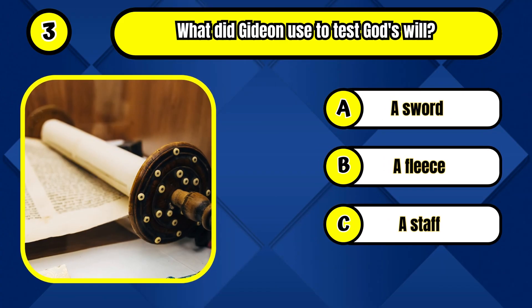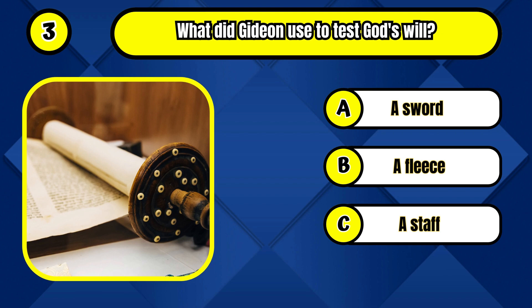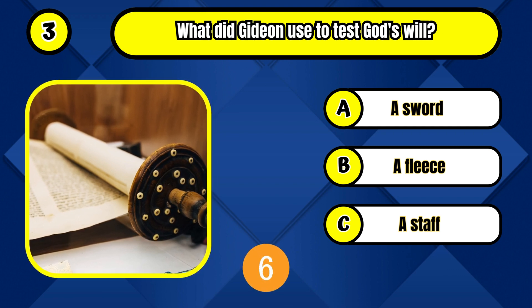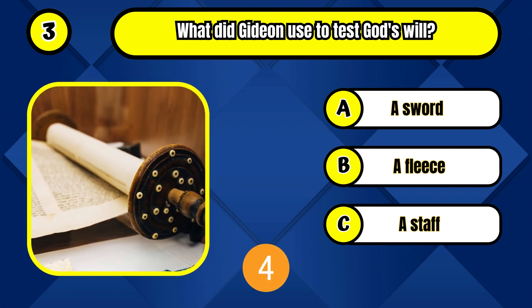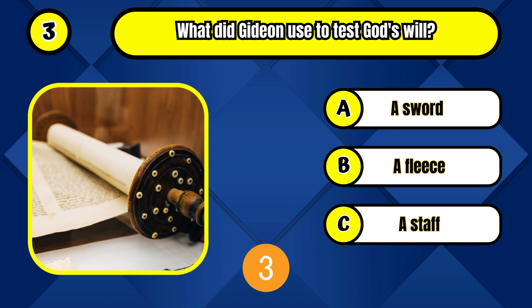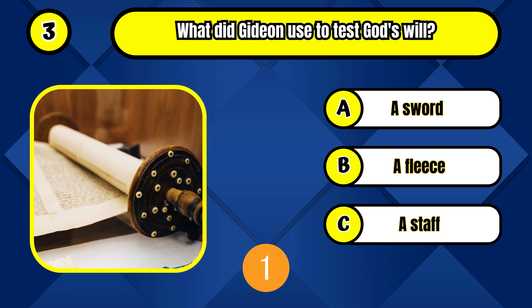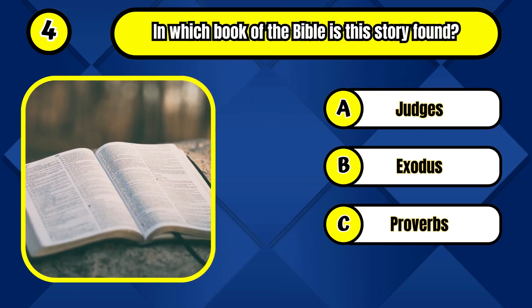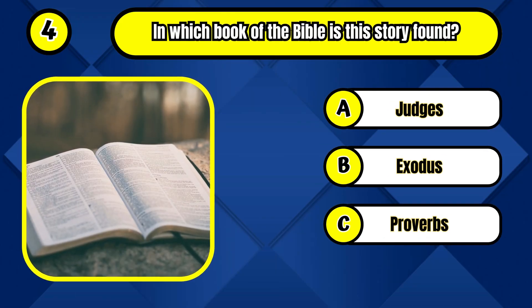What method did Gideon employ to discern God's will? A fleece. In which biblical book is this account found?